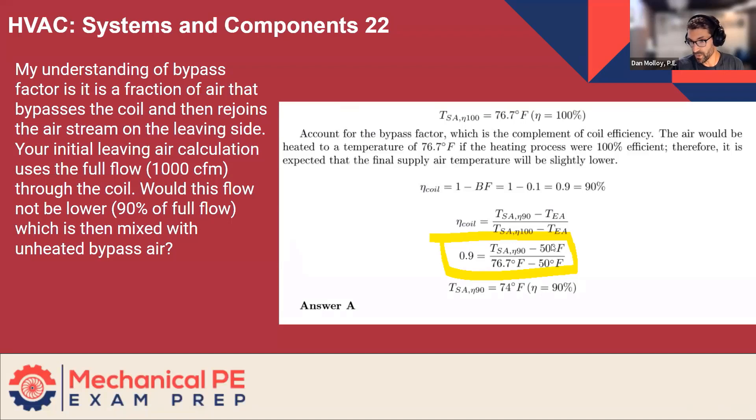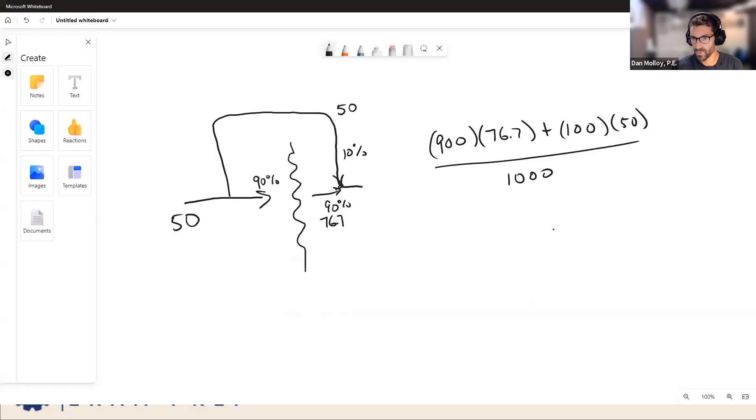And don't worry about memorizing formulas here. Just kind of try this on and see if it makes sense. You have this possible delta T supply minus entering. Let's use supply is confusing because it's downstream of the coils. Let's call this the leaving air temperature. I'll call this the entering air temperature and it's heating. So the leaving air temperature is greater.